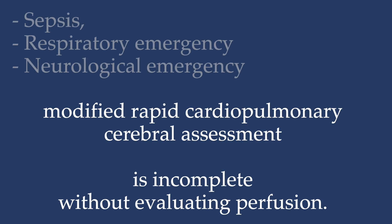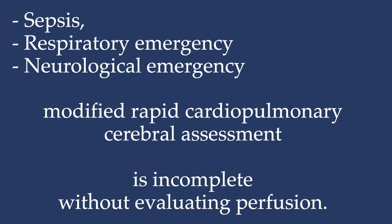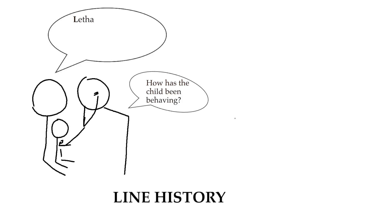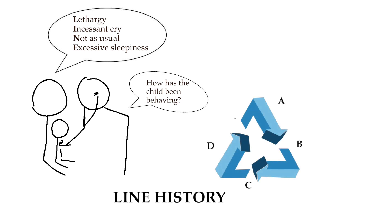Whether you are managing sepsis, a respiratory emergency, or a neurological emergency, the modified rapid cardiopulmonary cerebral assessment is incomplete without evaluating perfusion. The four signs of peripheral perfusion are interpreted based on the LINE history — that is, lethargy, incessant cry, not as usual, excessive sleepiness — the history from the mother, and the other parts of the pre-assessment triangle.